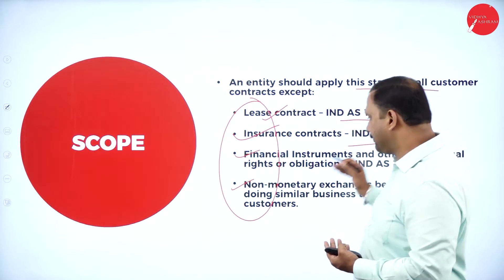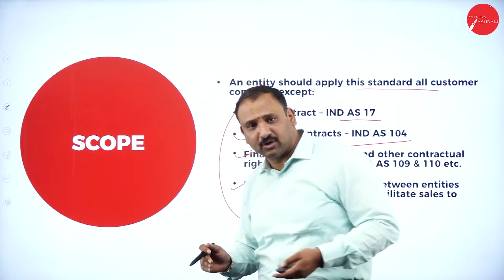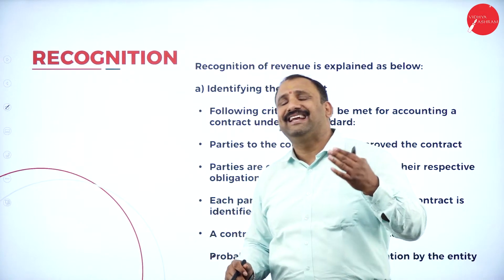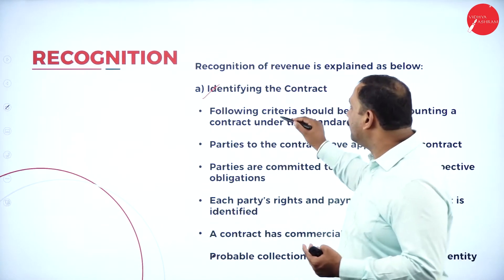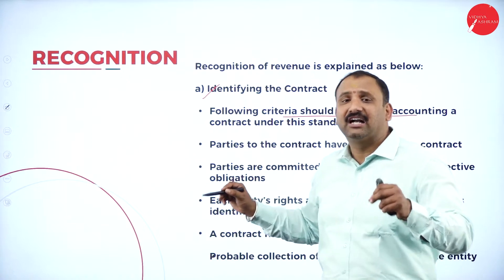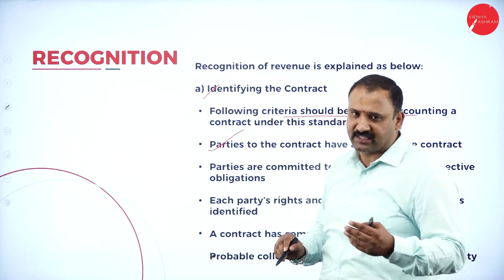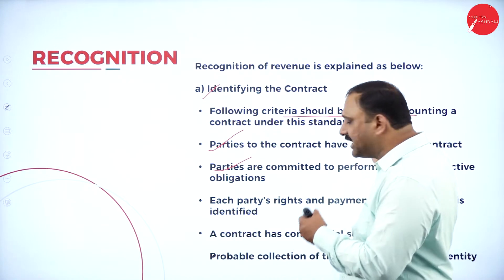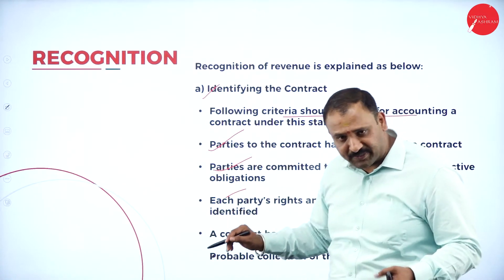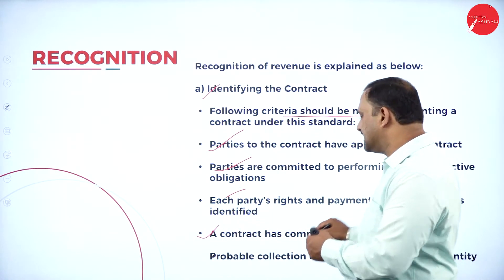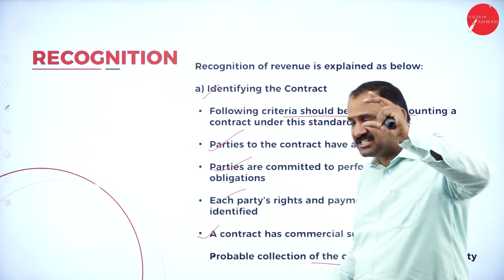Lease contracts are covered under AS17, and insurance contracts under AS104 - each has its own standards for measurement. Moving to the recognition pattern - what is the recognition factor? Identifying the contract: the following criteria should be met for accounting for a contract under this standard. First, parties to the contract have approved it. Parties are committed to perform. Each party's rights and payment have been identified. A contract has commercial substance and there is probable collection of consideration.